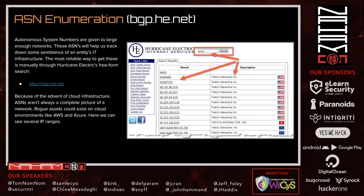One of my favorite sites is bgp.he.net — Hurricane Electric Internet Services — which has a free text search for an organization's Autonomous System Number. Searching Twitch gives two ASNs encompassing all their known IP address ranges, both IPv4 and IPv6. This doesn't represent cloud assets like AWS, GCP, or Azure, so it's not a complete picture, but it's a starting point. Their description lists them as Twitch Interactive Inc.